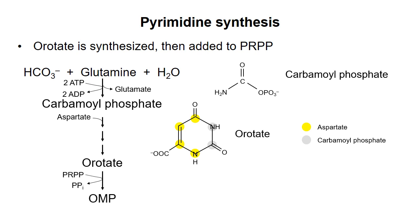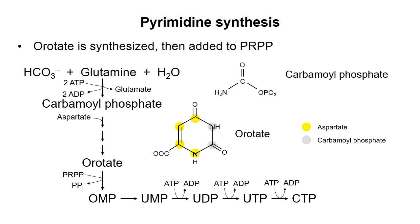Orotate is added to PRPP, the same activated form of ribose 5-phosphate that we saw in purine synthesis pathway. The orotate is then converted to uracil. The nucleotide is phosphorylated to the triphosphate form, and then CTP is produced in the last step.